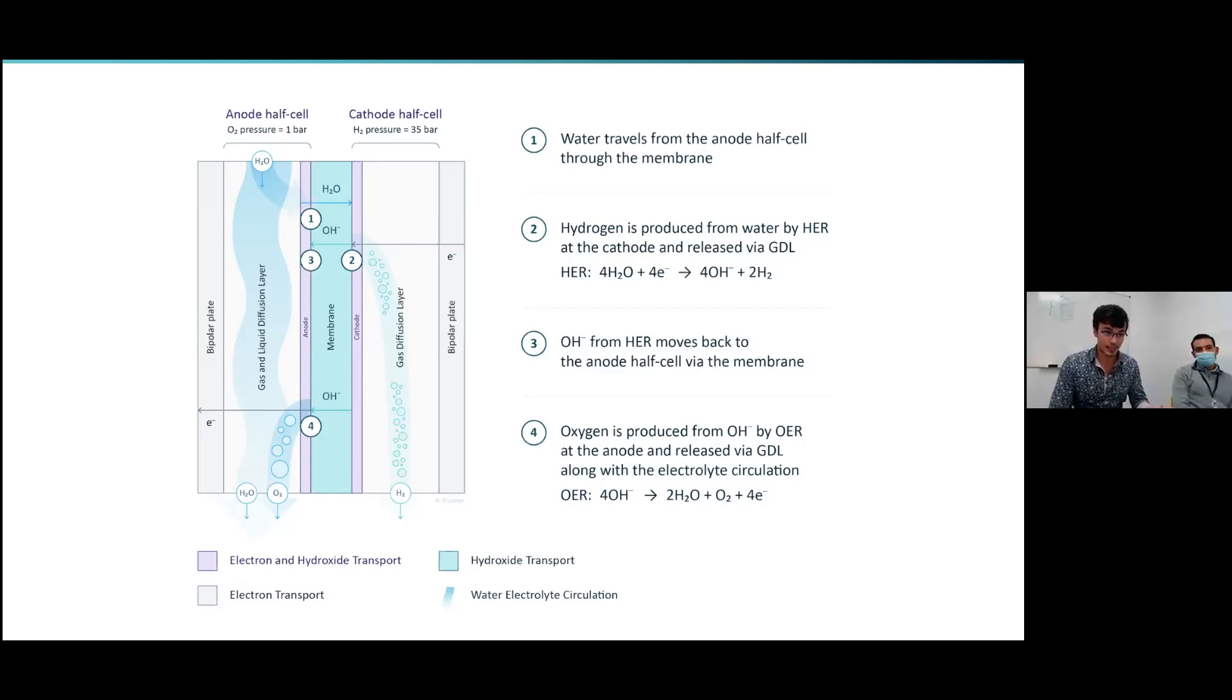But in our case, since it's a relatively new technology, there's a lot of fine tuning that has to happen. In particular, the anode and cathode, there's something called a triple phase boundary. Essentially, you need water to get in, gases to come out. But not only that, you also need to be able to transfer both electrons and hydroxide. The fine tuning of that interface is really a lot like cooking.